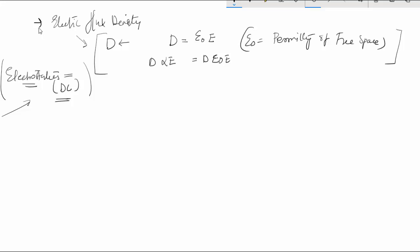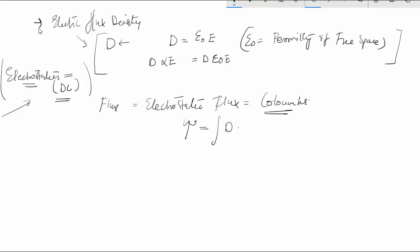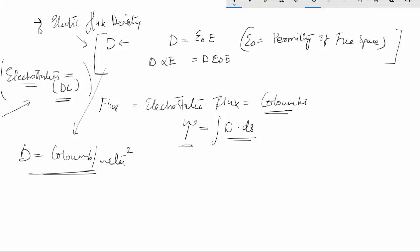It is possible to find the electric flux, also called electrostatic flux, which is given in coulombs. The symbol is psi and it is equal to the integration of D dot dS. The unit of electric flux density D is coulombs per meter squared, which is evident from this equation. D is measured in coulombs per meter squared — this is the unit of electric flux density, not electric field intensity.